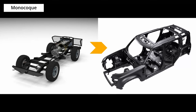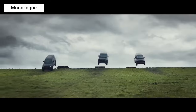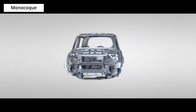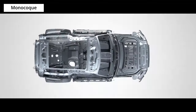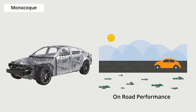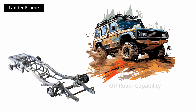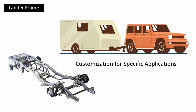It's worth noting that the Range Rover Defender's switch to a monocoque design brings various advantages, though it sparked discussions among enthusiasts who appreciated the traditional ruggedness of the previous Defender's body-on-frame construction. Land Rover has aimed to balance the vehicle's heritage with the demands of the modern market through the new monocoque design. In summary, if you prioritize on-road performance, fuel efficiency, and crash safety, a monocoque chassis is a suitable choice. If you require durability, off-road capability, or customization for specific applications, a ladder frame chassis may be more fitting.